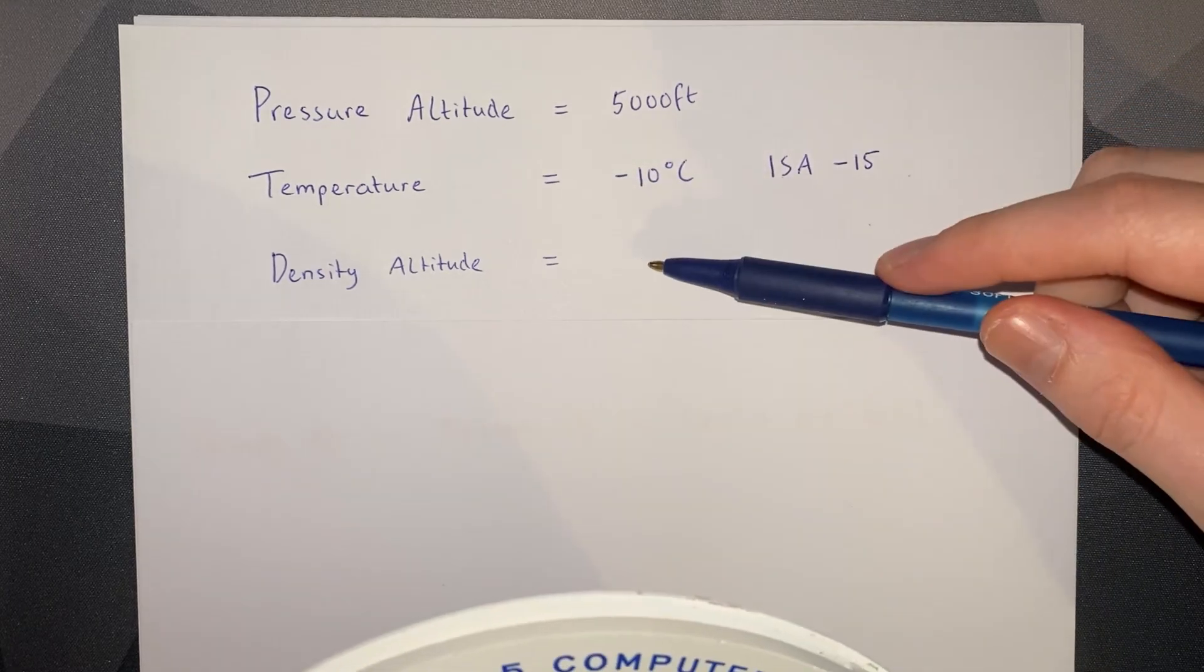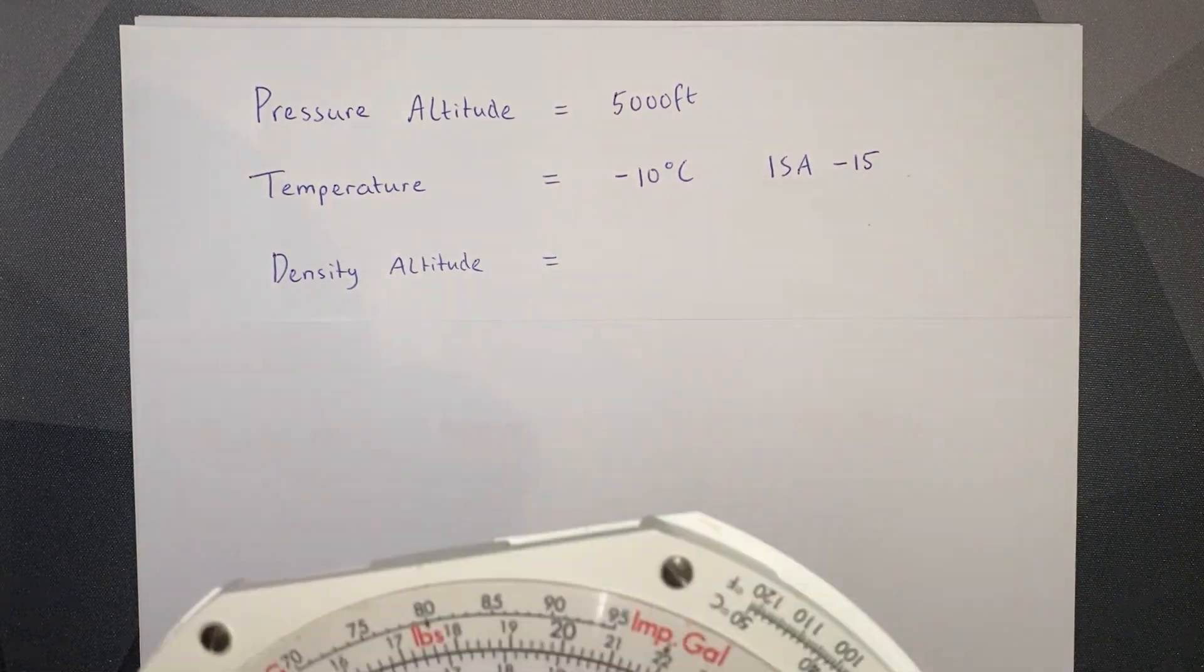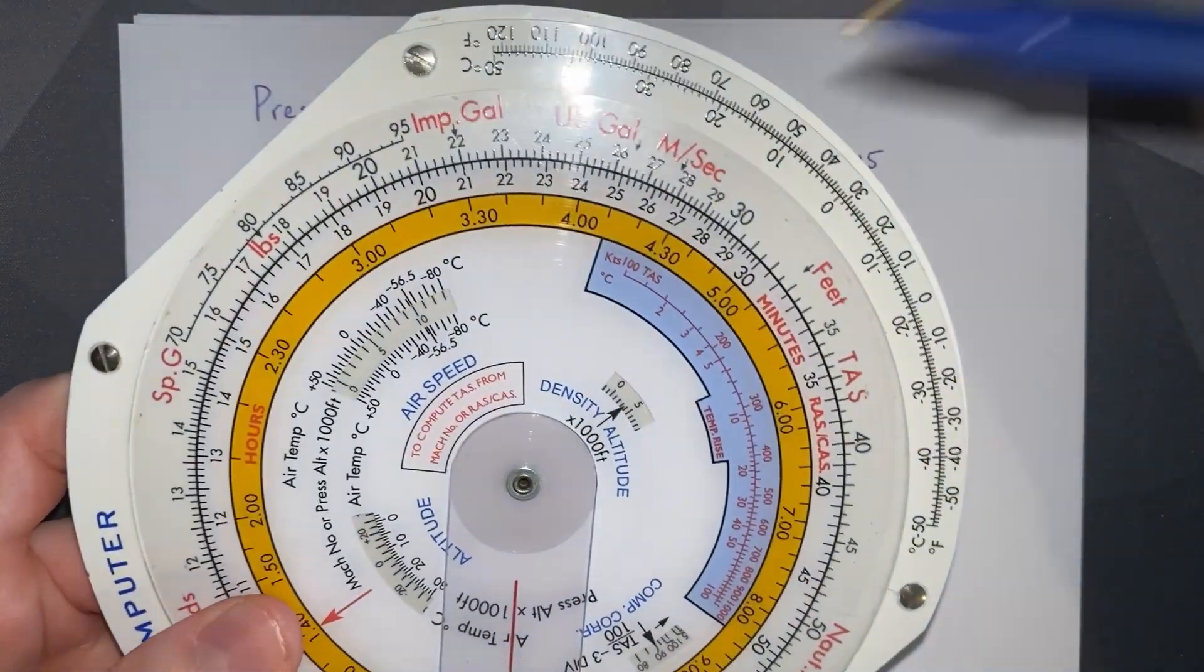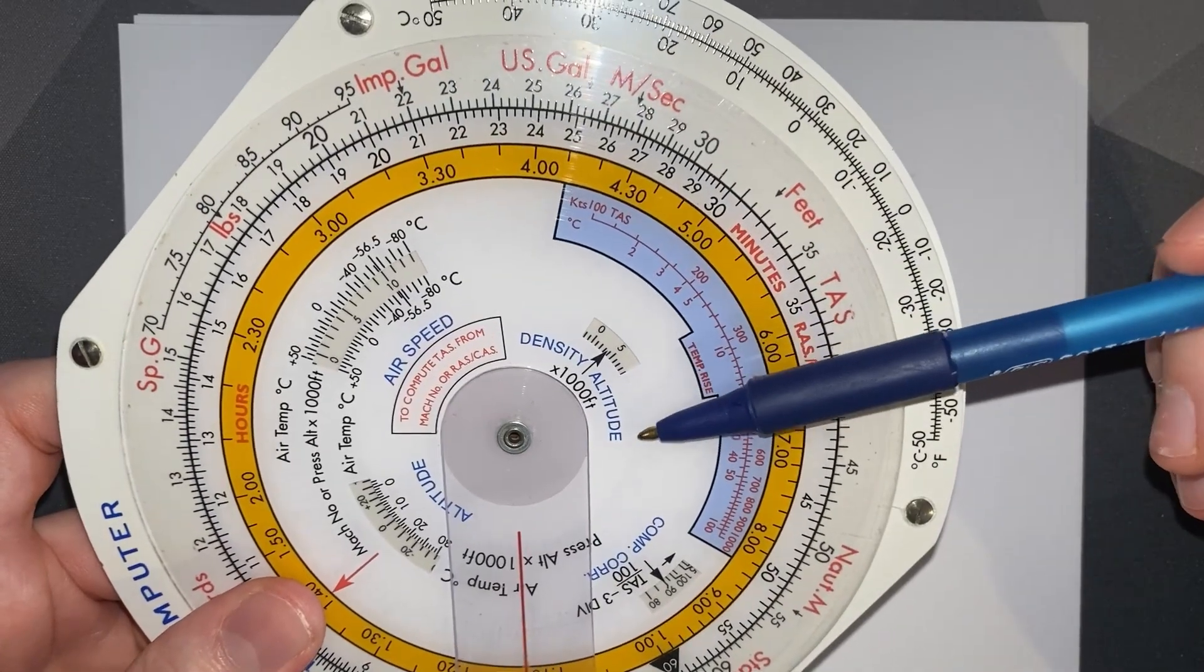We're asked to calculate density altitude. Our first method is to use our CRP5. The two windows we're interested in are the airspeed window and the density altitude window.